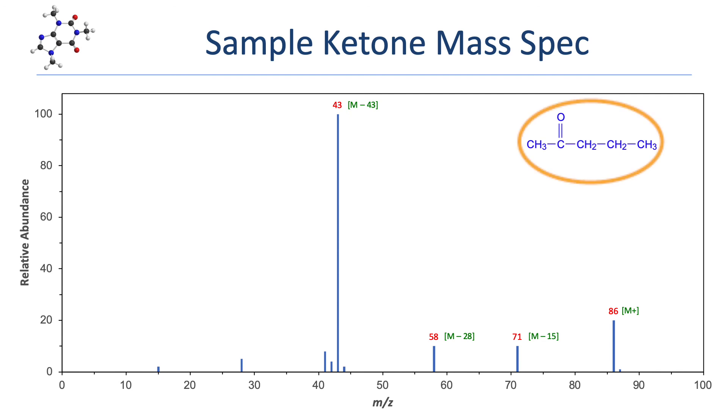If you look at the actual structure, you can see that's exactly what we have — a carbonyl with a methyl group on one side and a propyl group on the other side.